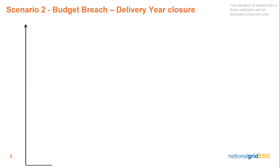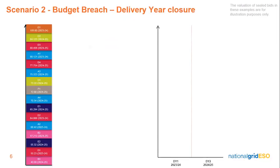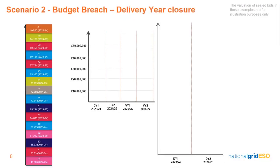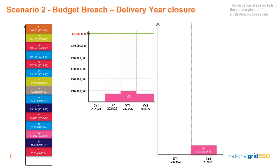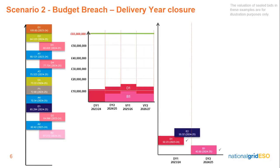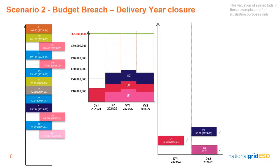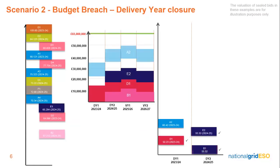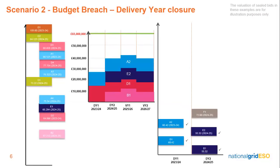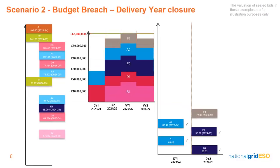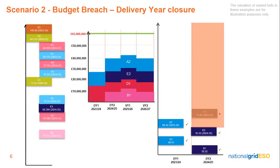Scenario 2: Budget Breach and Delivery Year Closure. Here is the bid stack again and budget impact display. Again, we can see that bids are allocated from cheapest to most expensive in each delivery year. Higher price flexible bids of successful applications are removed from the stack, and more expensive successful bids will set the clearing prices for bids below them in each relevant delivery year. If the next bid under consideration cannot uplift other bids below it to the same strike price or AFP and stay within the budget, the delivery year of that bid will close.